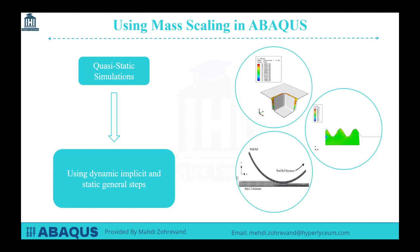First, we need to address the reasons for the necessity of using mass scaling and the conditions for employing this technique. Processes with a dynamic nature, but with a loading rate and process speed that allow them to be considered static, are called quasi-static processes. In quasi-static processes like deep drawing, forging, and rolling, we should use dynamic implicit and static general steps.